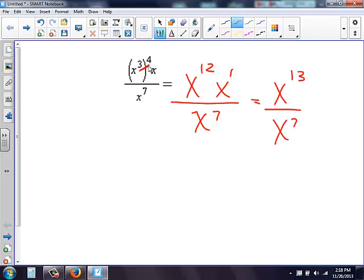On the bottom, I still have 7. Now I notice these bases are the same division here. I can subtract those exponents to combine them into 1. So 13 minus 7 gives me 6.